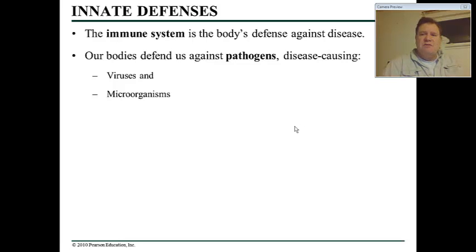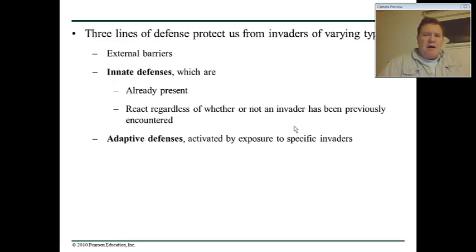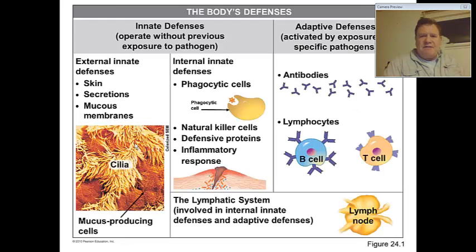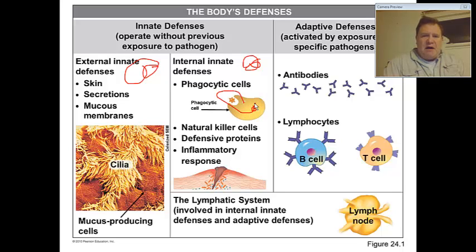What I want to talk about today is the immune system, which is one of the ways that our body defends itself from outside foreign invaders — pathogens, which are viruses and microorganisms that can get inside of our body and do us harm. We have a number of defenses: external body defenses, innate defenses we already have, and adaptive defenses that allow us to recognize a disease and not get it again in the future.